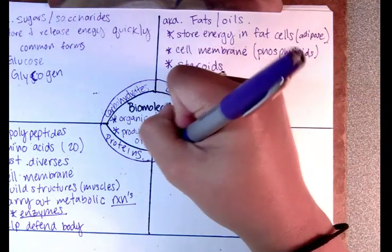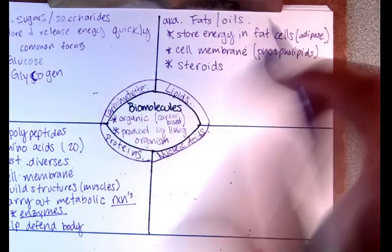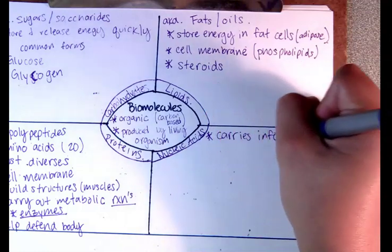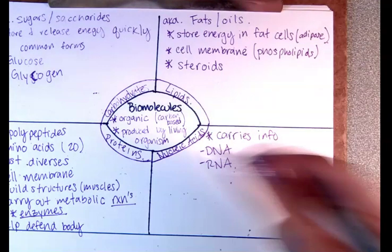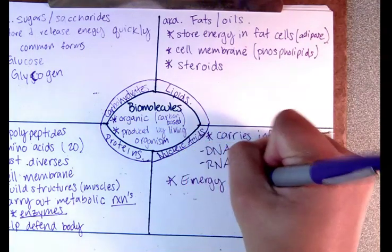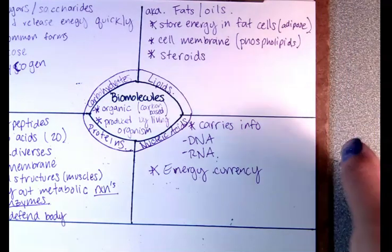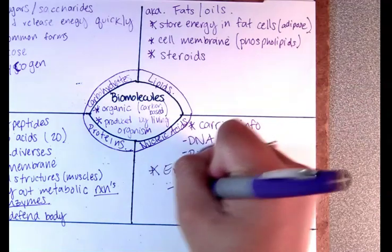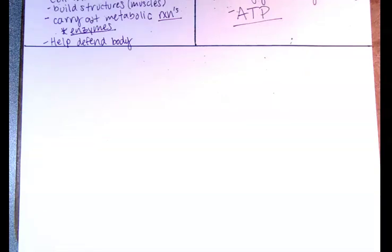The last type of biomolecule is nucleic acids. One of their major functions is to carry information, and they do that through DNA and RNA. Nucleic acids also play a role in your energy currency — like money for your body's energy — and that is in the form of ATP, which is very important.